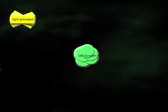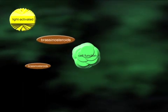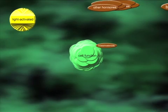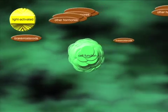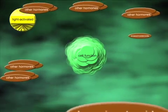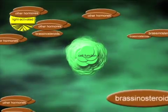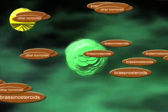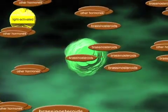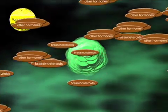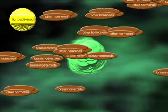Although brassinosteroids have been known to have a close relationship with several other hormones and light signals, the mechanisms involved with the steroid's interactions with them were not known. The researchers found that BZR1 protein directly controls the activity of many genes involved in plant responses to other hormones and light. The brassinosteroid action map provided in this study shows for the first time that multiple hormonal and light signals are integrated into an extensive network to control plant growth and development.